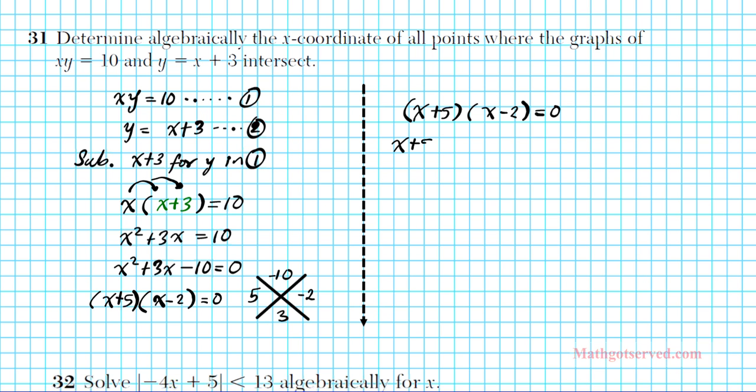So x plus 5 is going to be set to 0, and x minus 2 is going to be set to 0. Subtract 5 from both sides, you have x equals negative 5. And then add 2 to both sides, you have x equals 2. So the x-coordinates of the points where these two functions intersect are negative 5 and 2. Please do not forget to set each quantity to 0 and solve. Do not stop prematurely at this factored piece, which many people tend to do.